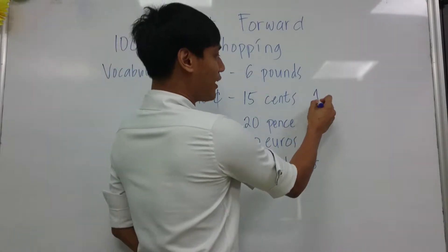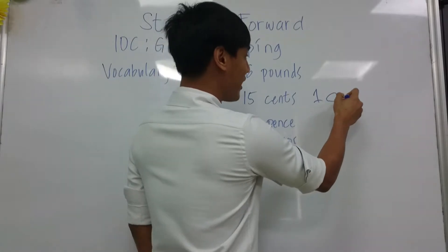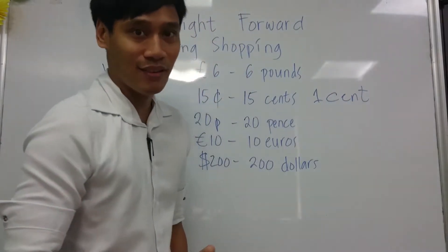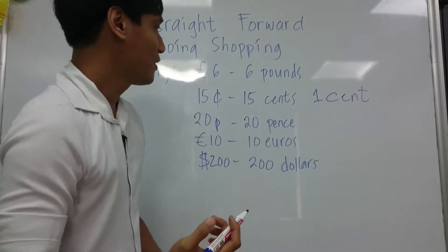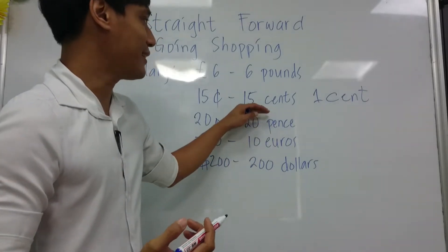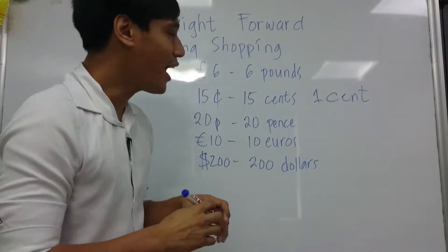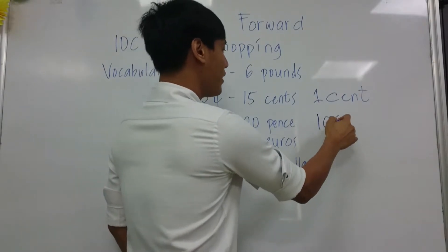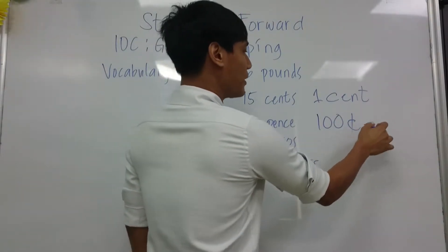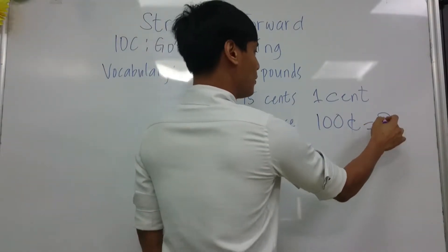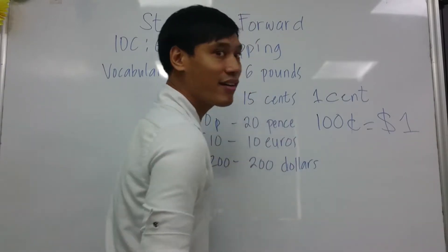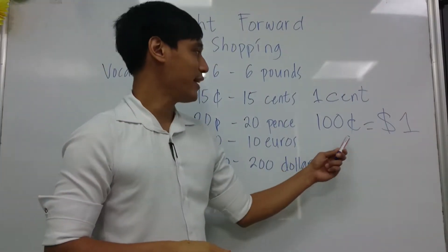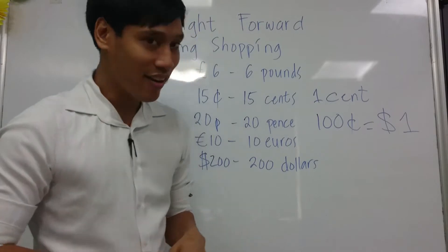If there is only one, you only say one cent — no S. So 15 cents, and then 100 cents. 100 cents is equal to one dollar. So 100 cents is equal to a dollar.